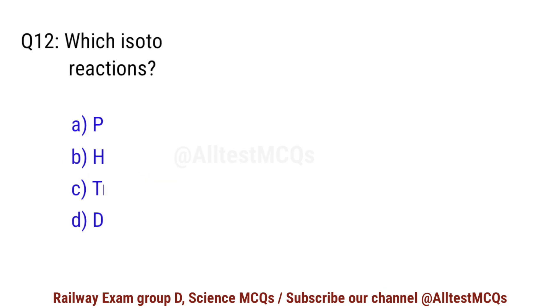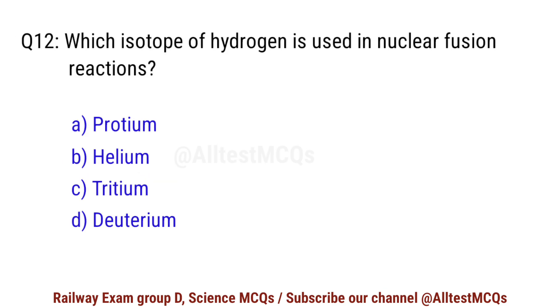Question No. 12. Which isotope of hydrogen is used in nuclear fusion reactions? Correct option is D. Deuterium.